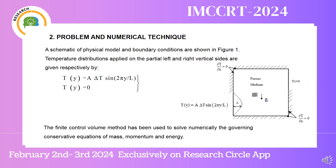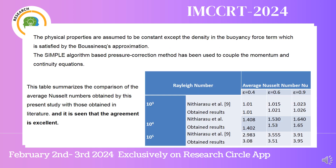Temperature distributions applied on the partial left and right vertical sides are given respectively by the stated formulas. The finite control volume method has been used to solve numerically the governing conservative equations of mass, momentum, and energy. The physical properties are assumed to be constant except the density in the buoyancy force term, which is satisfied by the Boussinesq approximation. The SIMPLE algorithm-based pressure correction method has been used to couple the momentum and continuity equations. A table summarizes the comparison of the average Nusselt number obtained in the present study with those in the literature, and the agreement is excellent.